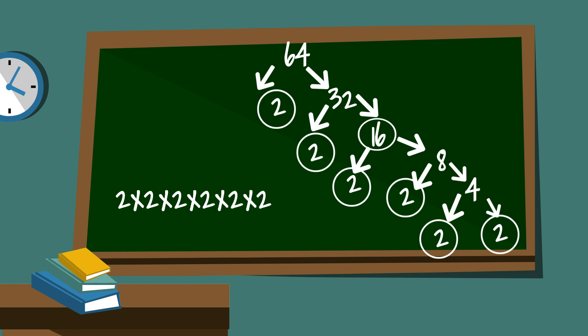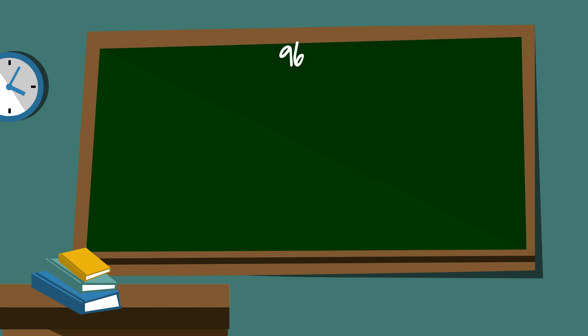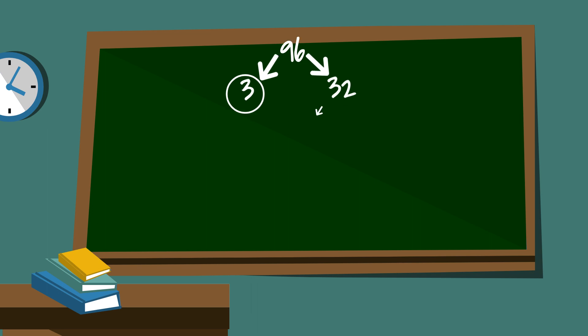Next let's look at 96. I will begin with 3 times 32. I will circle the 3 because it is prime. Now 2 goes into 32 by multiplying it by 16 — I will circle the 2.